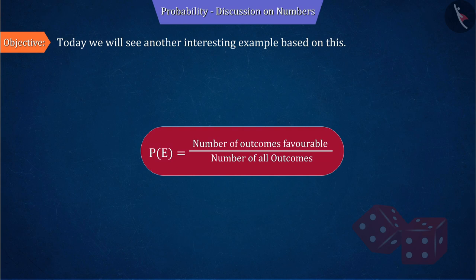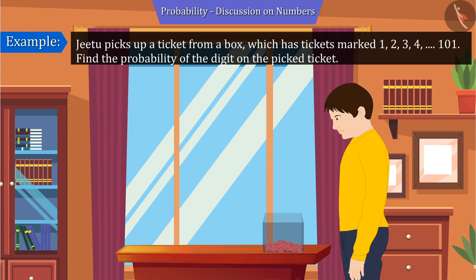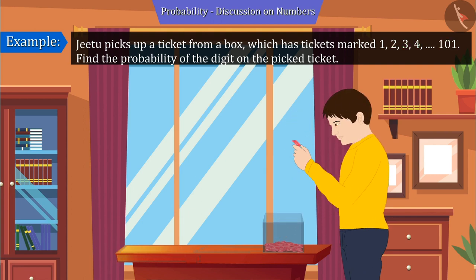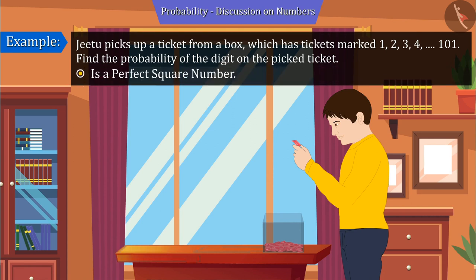Today we will see another interesting example based on this. Jitu picks up a ticket from a box which has tickets marked 1 to 101. Find the probability that the digit on the picked ticket is a perfect square number and is divisible by 7.